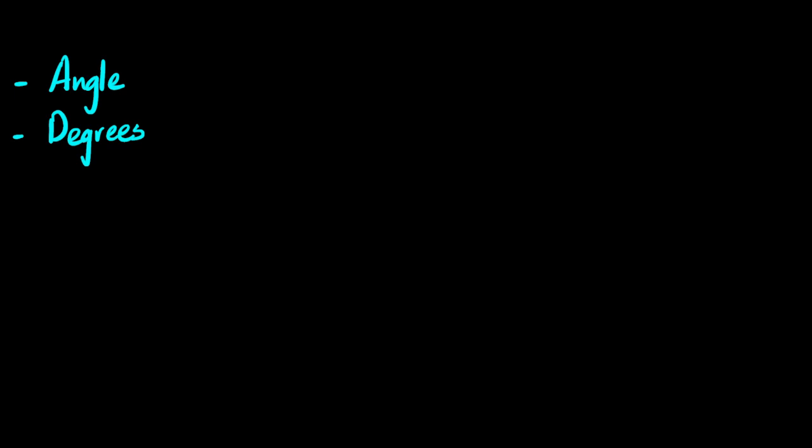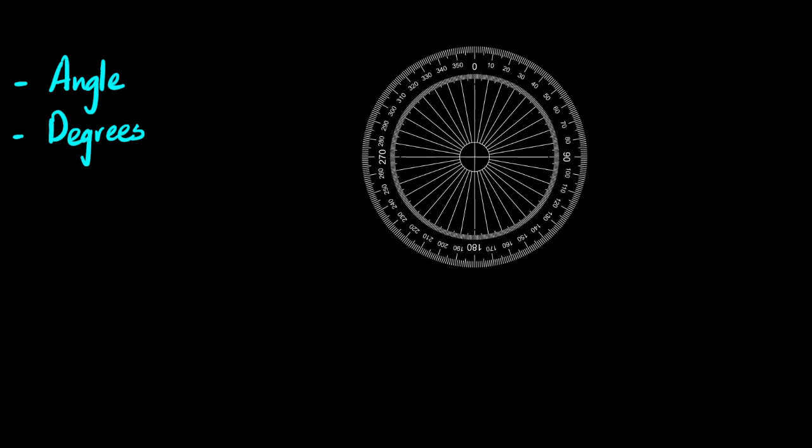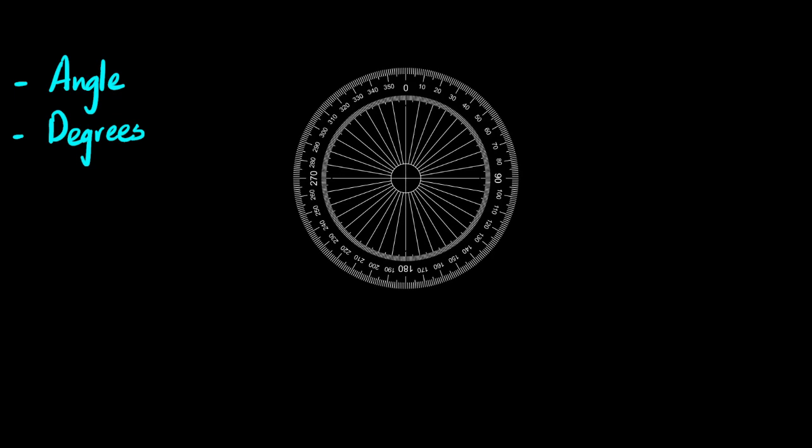But have you ever thought of why is a degree defined in the way that it is defined? Why does one circle have 360 degrees? So what happened when the degree was being defined was that someone came up with this idea that one circle should be split into 360 parts, and then each part and the angle that it produces at the center of the circle is said to be 1 degree.